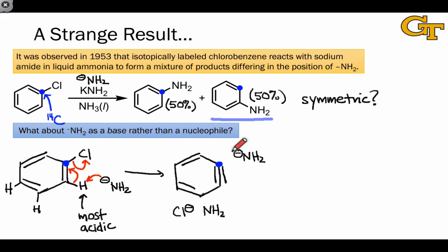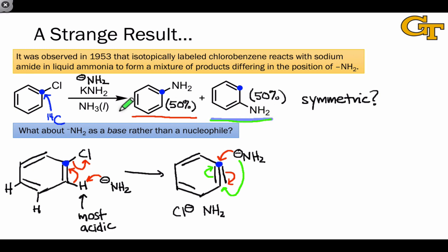One product comes from addition of the NH2- anion to the carbon bearing the label. Addition of the NH2- anion to the other carbon of the triple bond, however, leads to the product in which NH2 has substituted at the 2-position relative to where the chlorine was located and relative to where the label was located. Because the carbons of the triple bond are homotopic, we should expect this to occur with approximately equal probability, leading to a 50-50 mixture of the observed products.